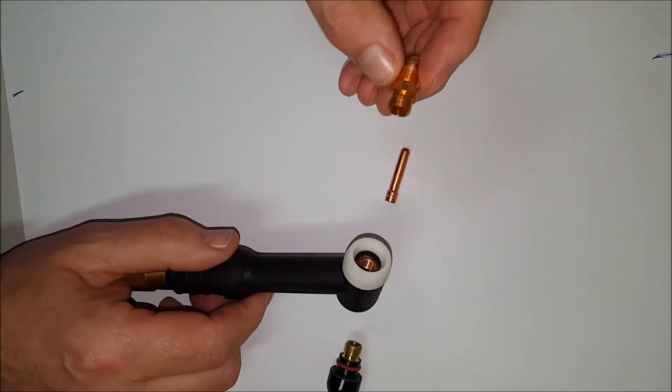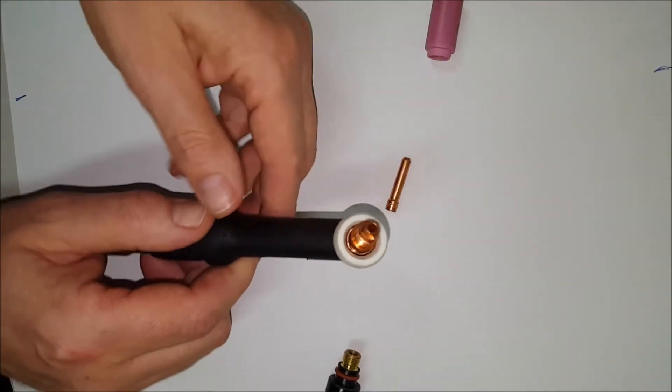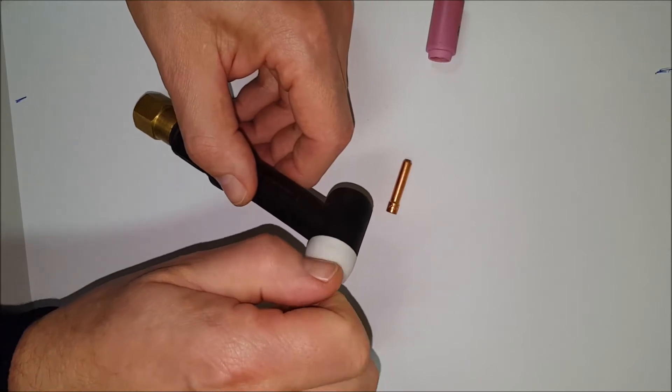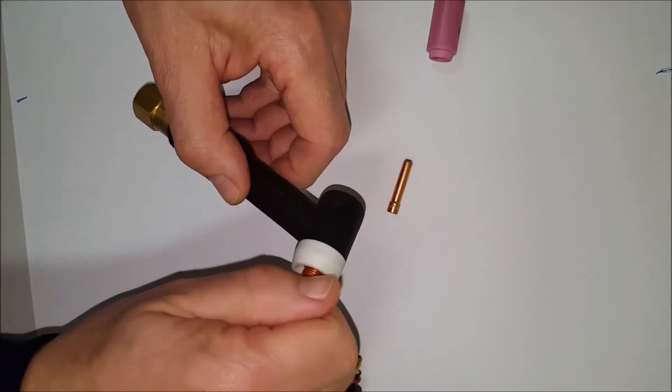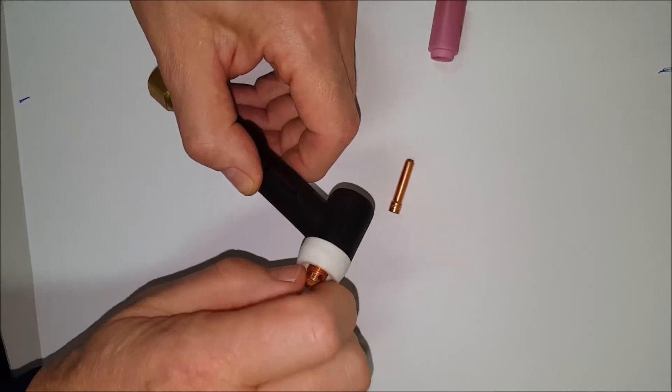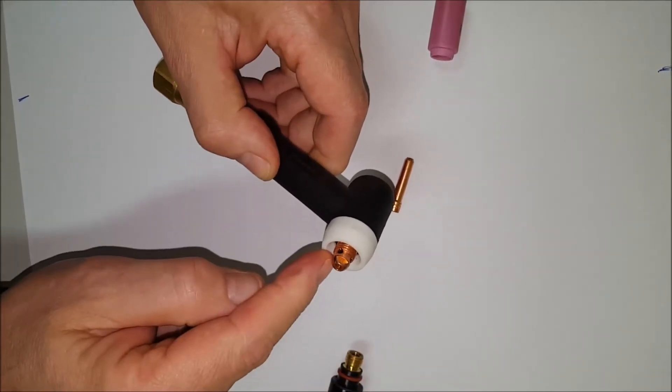It's really important that when you put the collet body into the torch, it is screwed all the way in finger tight. No need to go berserk and try to tighten this up with pliers or anything. Finger tight's fine, but it needs to be all the way inside the torch.